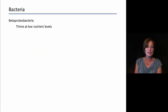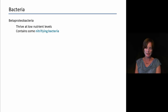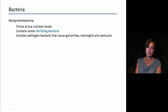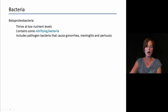The beta proteobacteria also grow at very low nutrient levels and contain some nitrifying bacteria that can oxidize nitrogenous compounds. This group includes some pathogenic bacteria responsible for causing gonorrhea, meningitis, and pertussis (whooping cough).